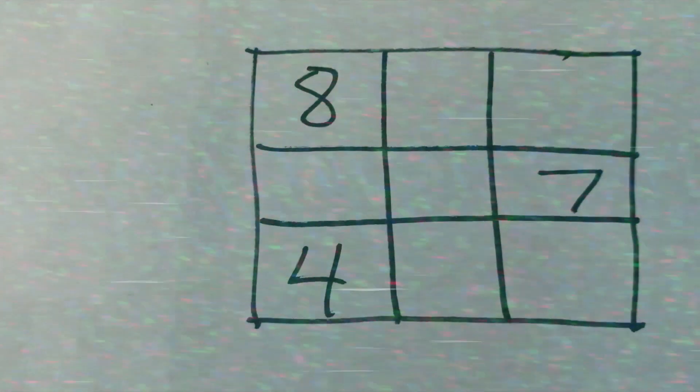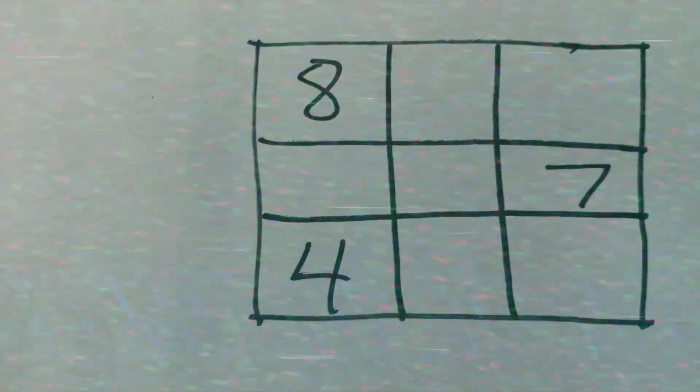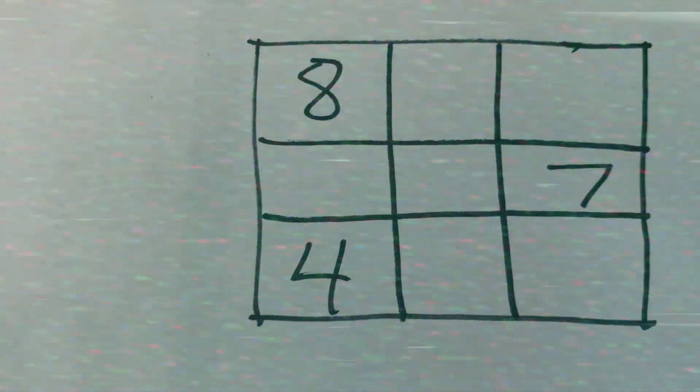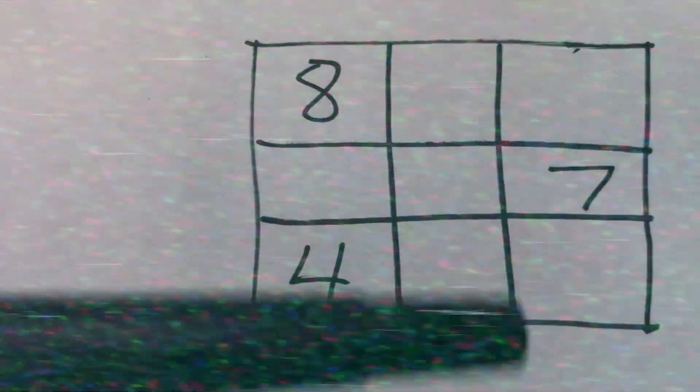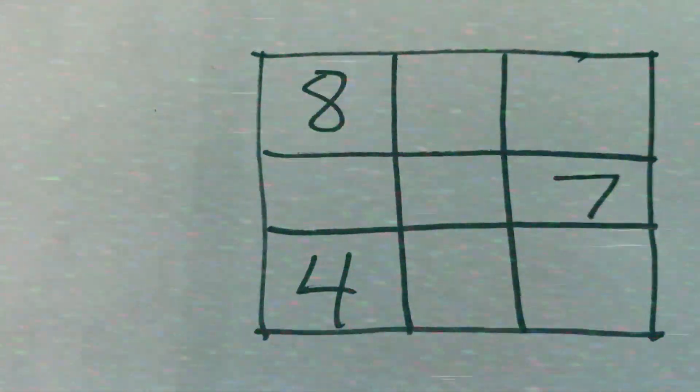So again, what are the numbers that belong in the missing cells? Every single three-number column, or three-number row, or three-number diagonal, must equal the same.